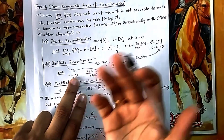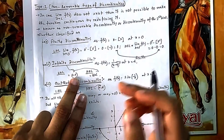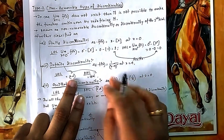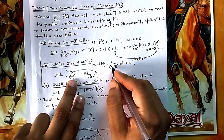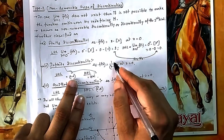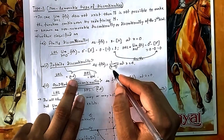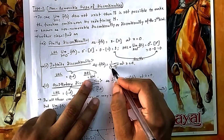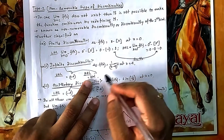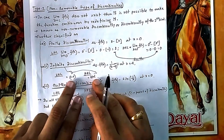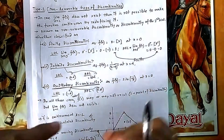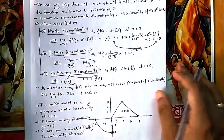If you get infinite values for LHL or RHL, the limit also does not exist, and it is called infinite discontinuity. For example, a function like 1/(x−4)². If you approach 4 from the right, you get 1/0⁺ = +∞, and from the left, since the square makes it positive, you also get +∞. In both cases you are getting infinity, so the limit does not exist — that is infinite discontinuity.